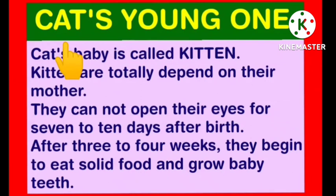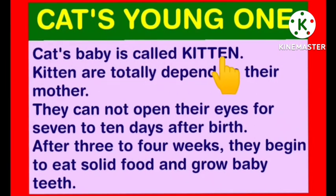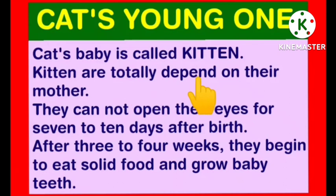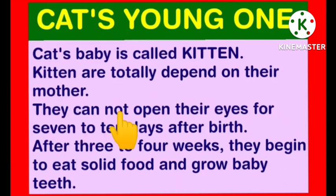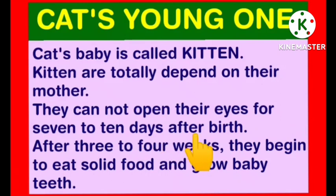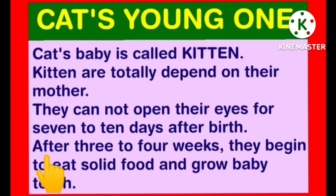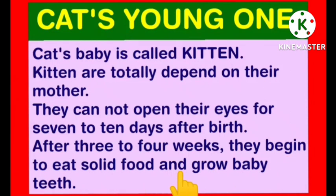Now we will learn about cat's young one. Cat's baby is called kitten. Kittens are totally dependent on their mother. They cannot open their eyes for 7-10 days after birth. After 3-4 weeks, they begin to eat solid food and grow baby teeth.